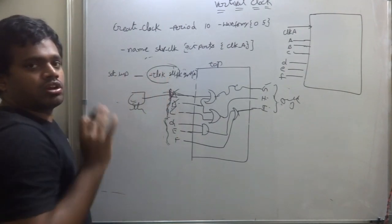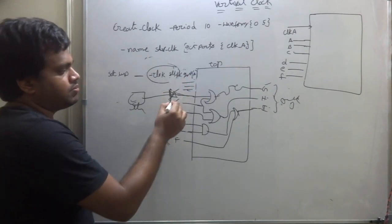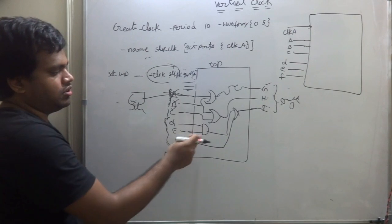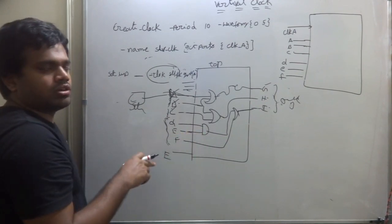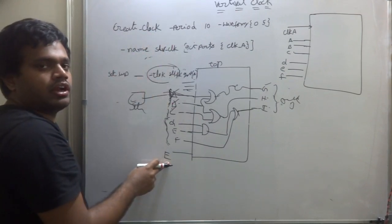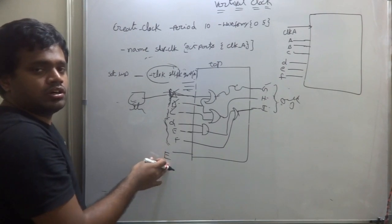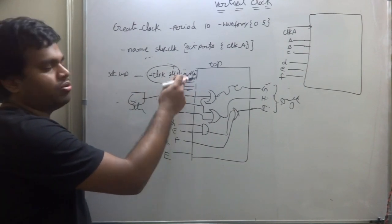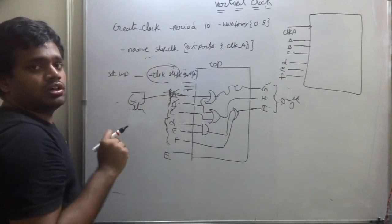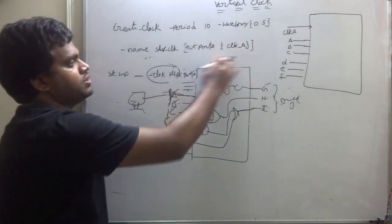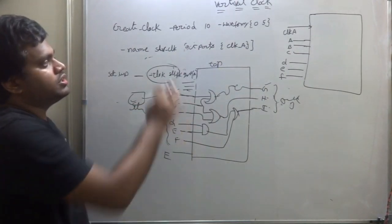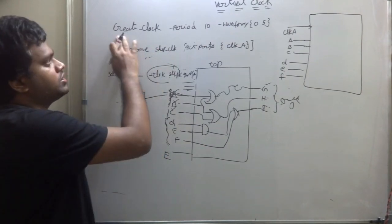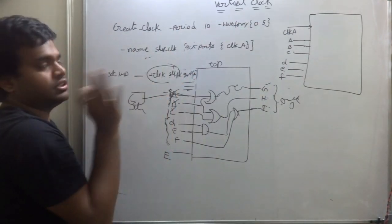You can use a virtual clock any time when some set of signals don't have a known clock. For example, suppose A, B, C is working on clock one and D, E, F is working on clock two, but E is not working on either — you can create a virtual clock and write set_input_delay using that virtual clock for those ports. Virtual clock means there is no physical port in the design, but you use it for timing calculation.